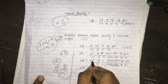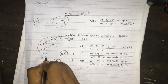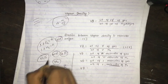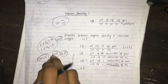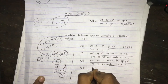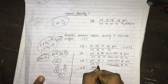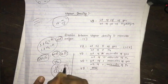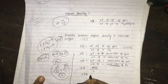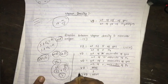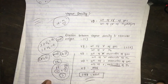Vapor density equals the weight of one molecule of gas divided by the weight of one molecule of hydrogen. The weight of one molecule of hydrogen is 2 amu. Therefore, vapor density equals molecular weight divided by 2, which gives us molecular weight = 2 × vapor density. This is the required relation between vapor density and molecular weight.